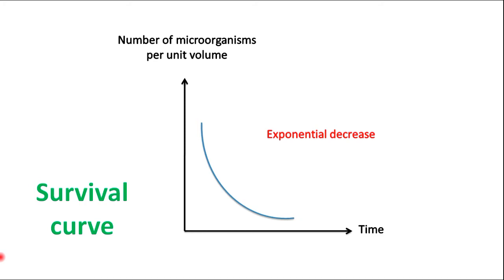A microbial survival curve, like survival curves in general, is a reflection of the cumulative distribution of the cell death time. The points on this curve represent survivors at any time when that suspension is being heated at a constant temperature.